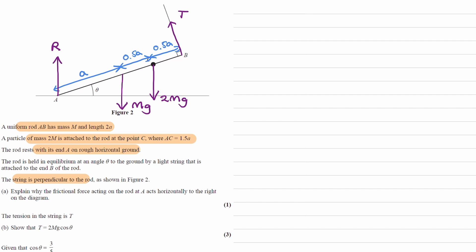We're also told that it's in equilibrium, so that means there is no resultant force and no resultant moment about any point. So if we take moments about any point, the overall clockwise moments and anti-clockwise moments should sum to 0. And there's no resultant force, meaning upward forces equal downward forces, and forces to the left equal forces to the right. That brings us onto part A, which asks: explain why the frictional force acting on the rod at A acts horizontally to the right on the diagram.